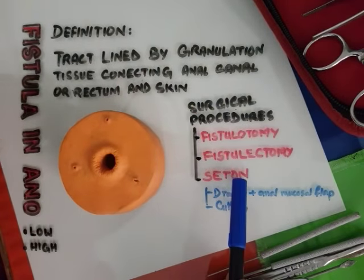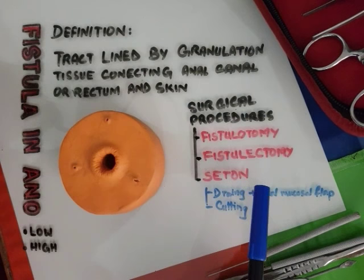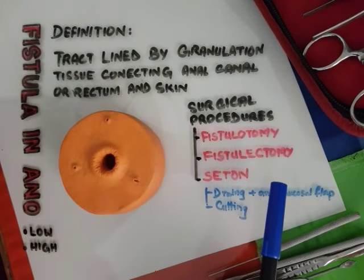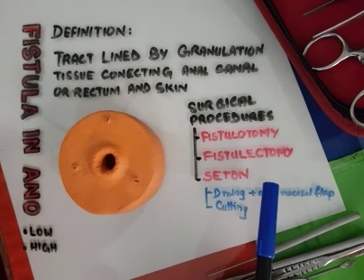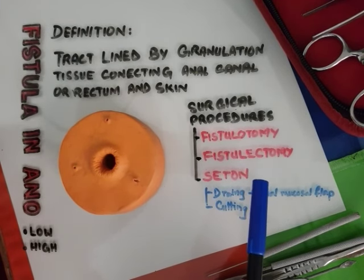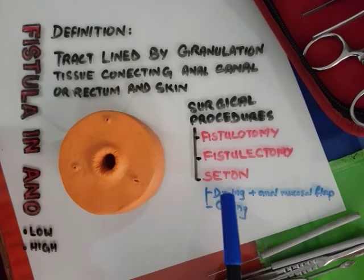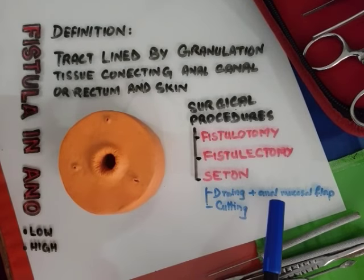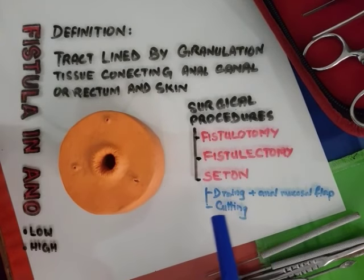The third is seton. Seton is basically a thread that is passed through the fistula's tract, and it has two types: draining seton and cutting seton.